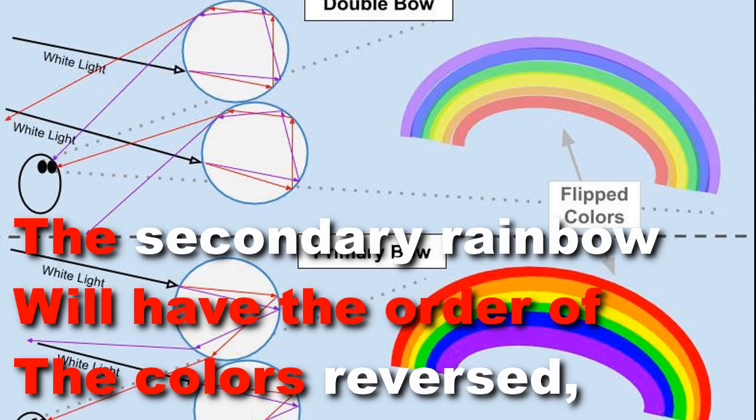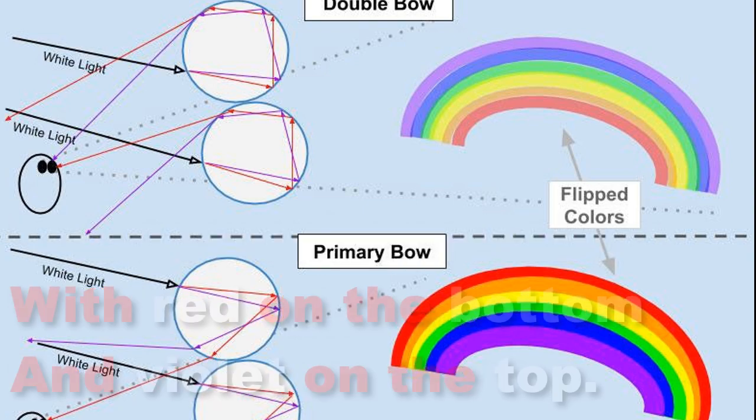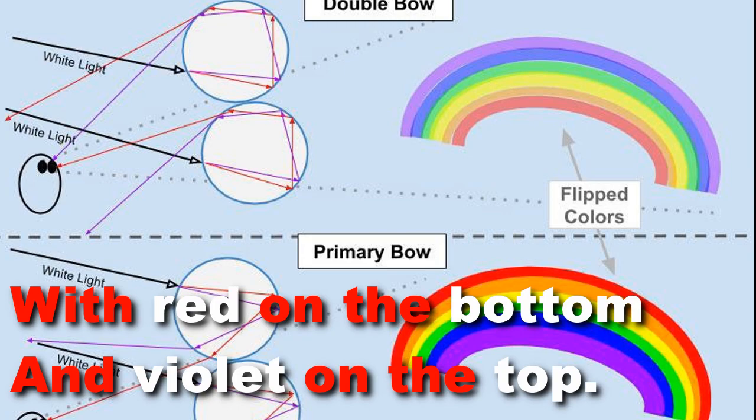The secondary rainbow will have the order of the colors reversed, with red on the bottom and violet on the top.